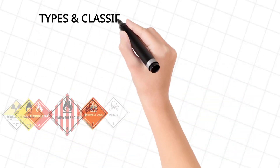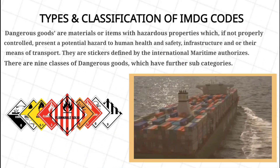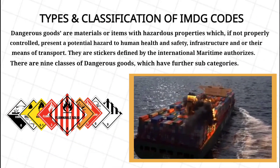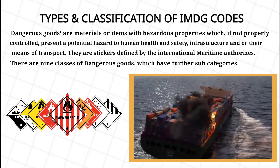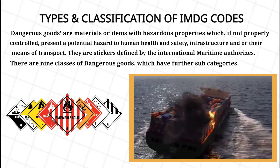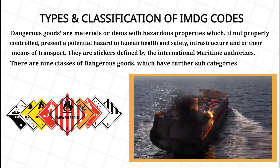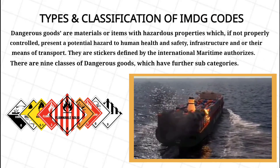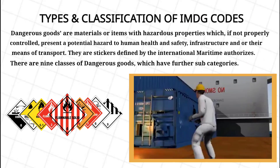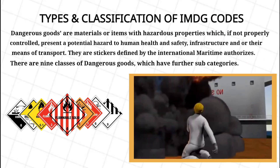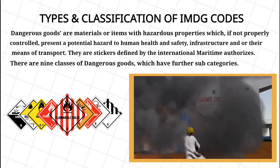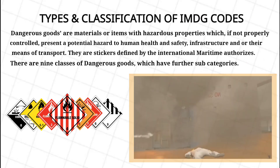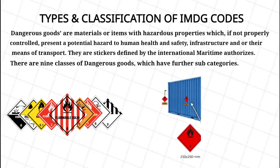Types and classification of IMDG codes. Dangerous goods are materials or items with hazardous properties which, if not properly controlled, present a potential hazard to human health and safety, infrastructure and or their means of transport.